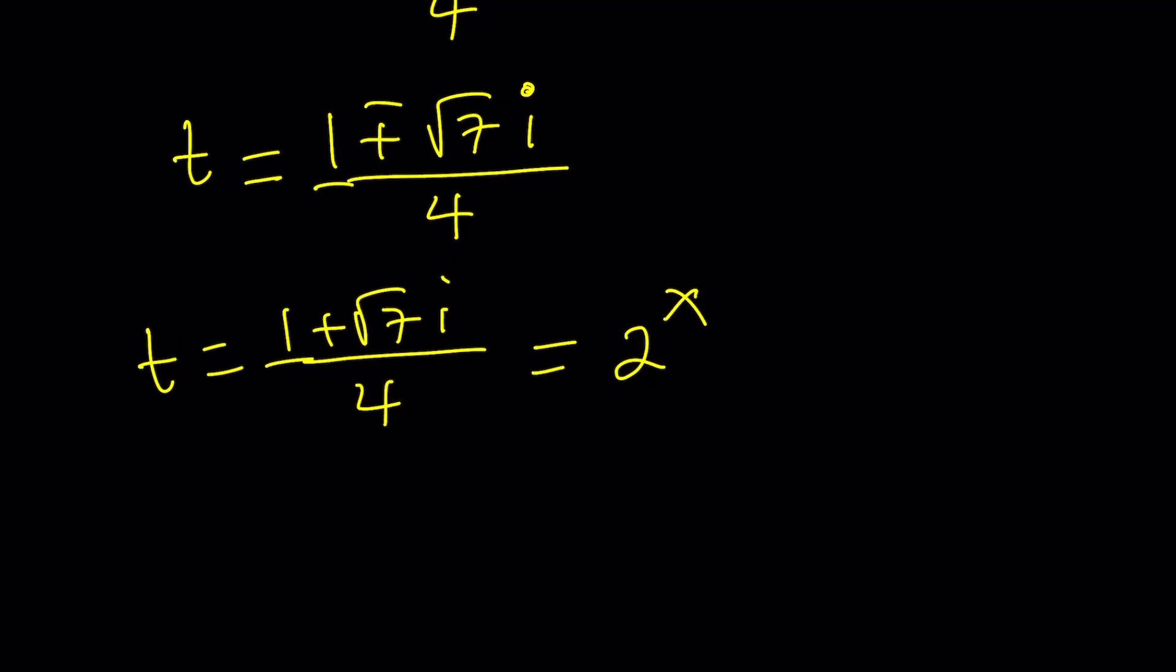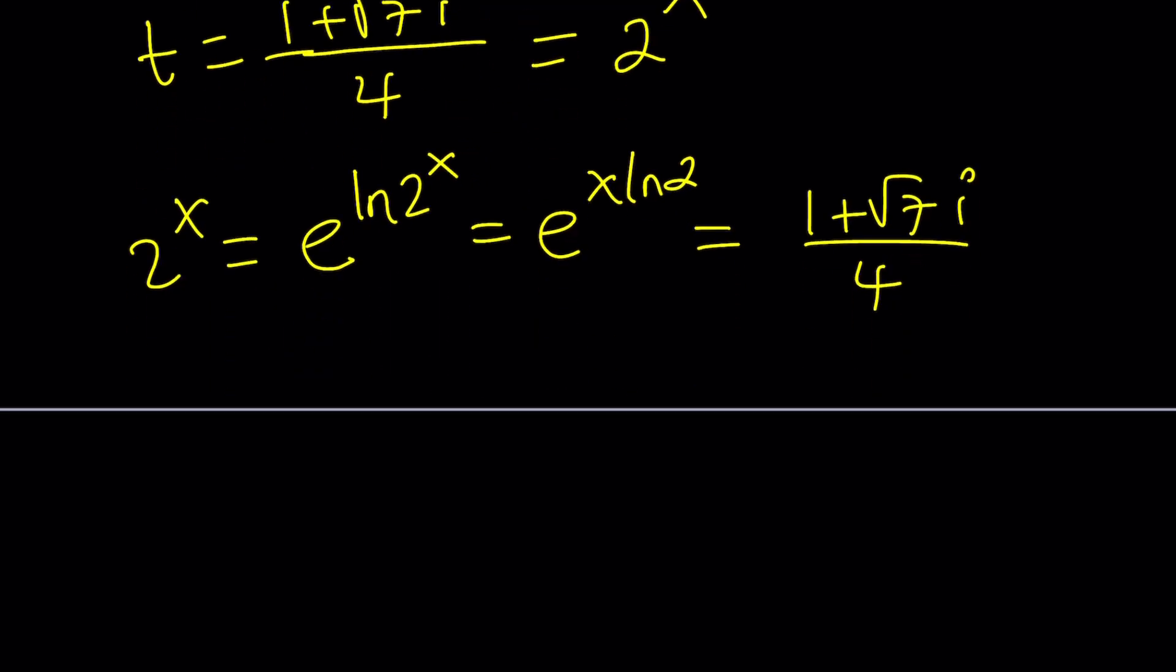So first of all, I want to use Euler's formula or Euler's number as my base. So 2 to the x can be written as e to the power ln 2 to the x, which is e to the power x ln 2. That's what's nice about it, that we can always change the base. Remember how we have the change of base formula for logarithms? We also have it for exponentials. Now this is equal to t, which is 1 plus root 7i all over 4. So here's what I need to do. I do have an equation of two complex numbers. One of them is exponential, the other one isn't. So we kind of need to polarize this. Turn it into a polar form. I don't know if people say polarize, but that's what I mean. Let's use the polar form.